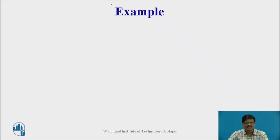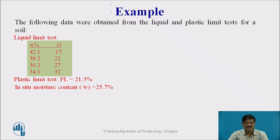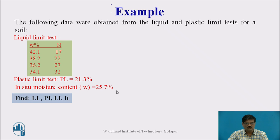Now let us take a look at an example. The following data were obtained from liquid and plastic limit tests for a soil. The plastic limit is given as 21.3, and the in-situ moisture content (natural water content) is given as 25.7. We are required to find the liquid limit, plasticity index, liquidity index, and flow index.